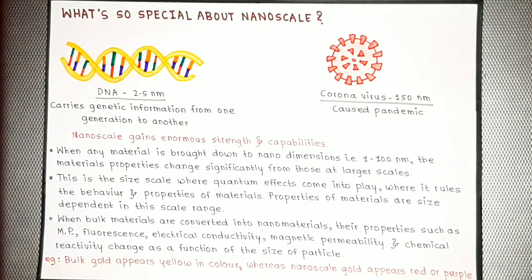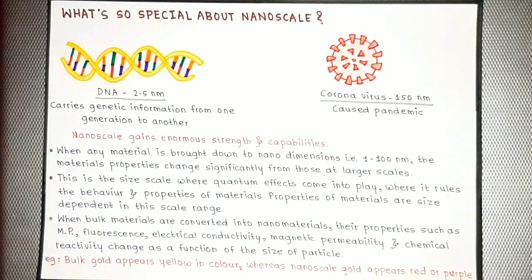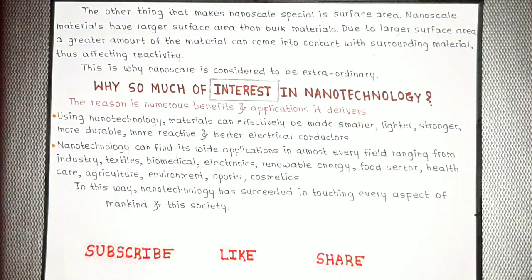When bulk materials are converted into nanomaterials, their properties such as melting point, fluorescence, electrical conductivity, magnetic permeability, and chemical reactivity change as a function of the size of the particle. For example, bulk gold — the kind you wear — appears yellow in color, but when the same gold is brought down to nanoscale, it appears red or purple. That's nanoscience! The other thing that makes nanoscale special is surface area. Nanoscale materials have larger surface area than bulk materials, meaning a greater amount of the material can come into contact with surrounding material, thus affecting reactivity. This is why nanoscale is considered extraordinary.